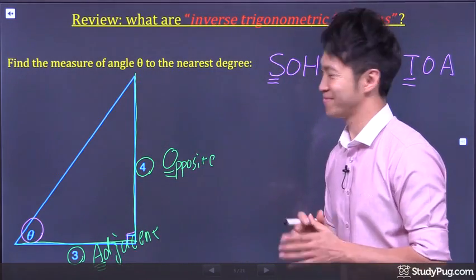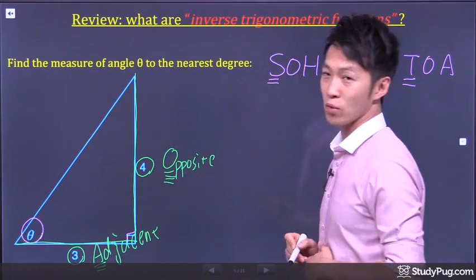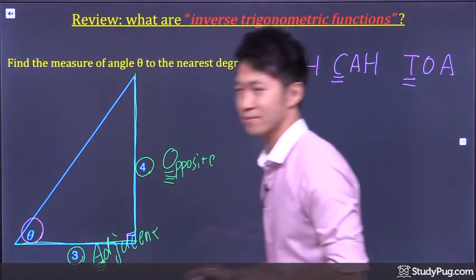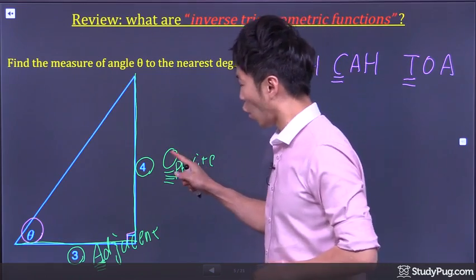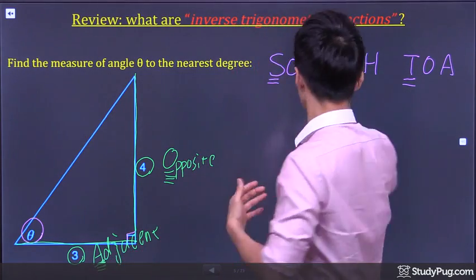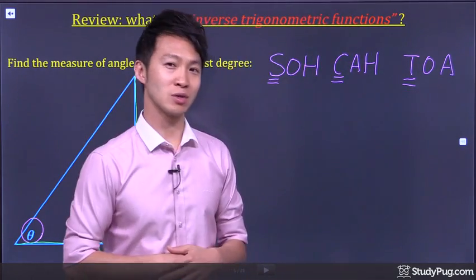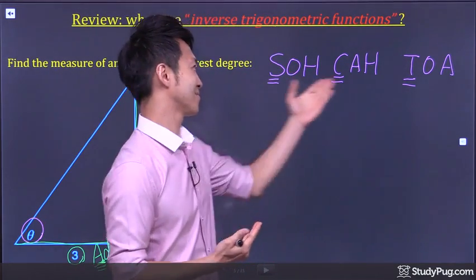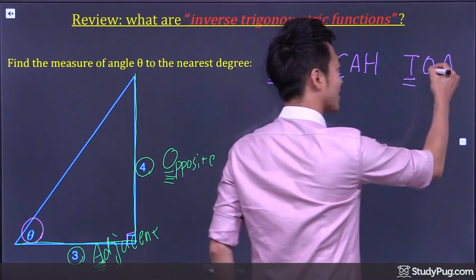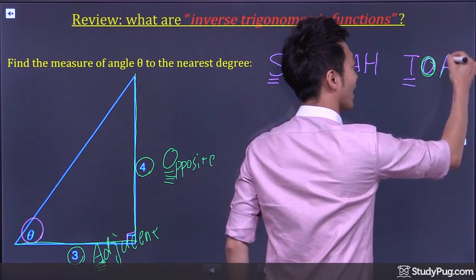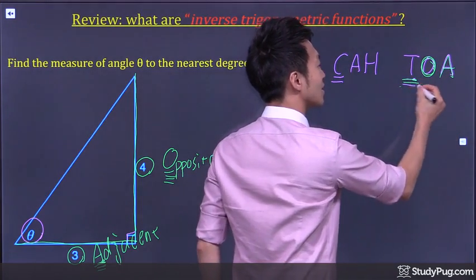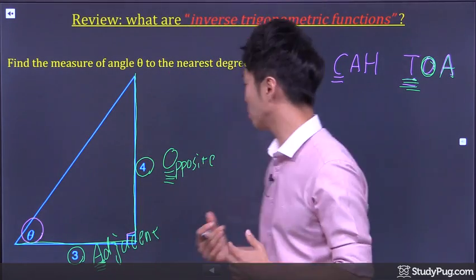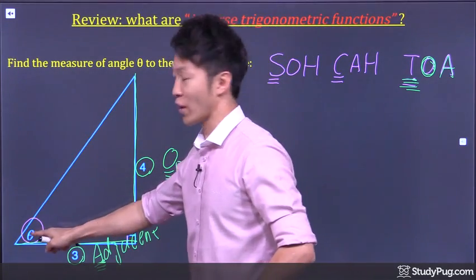Now, given opposite O and adjacent A, which trigonometry function should we use? Given O and A, that would be this guy, right? Given O and A, we should use tangent function to help us solve for the unknown angle here.